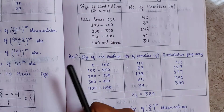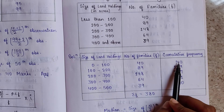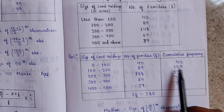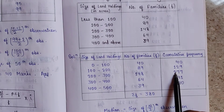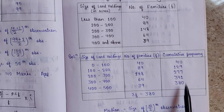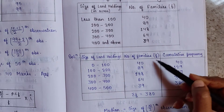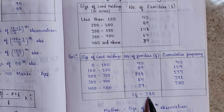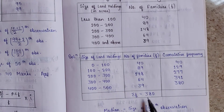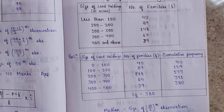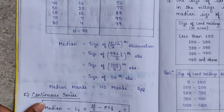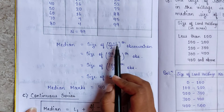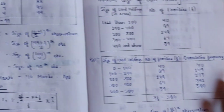The first cumulative frequency is 40. Then 40 plus 89 is 129; 129 plus 148 is 277; 277 plus 64 is 341; 341 plus 39 is 380. The sum of frequency is 380, and the last cumulative frequency value is also 380, so this is correct. Note that for continuous series we use N/2, not (N+1)/2.